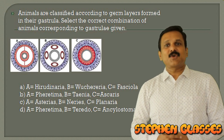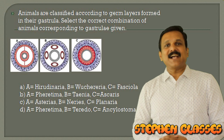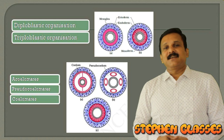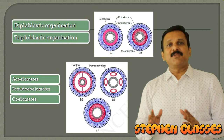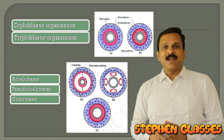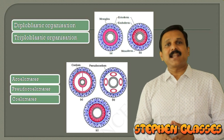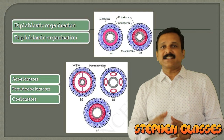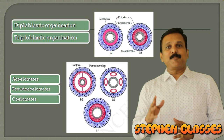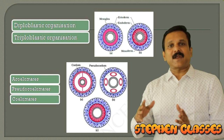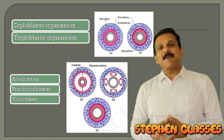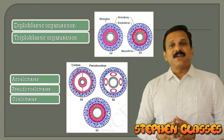Select the correct combination of animals corresponding to the gastrulae given. We can see that the gastrula is an embryonic structure; within this embryonic structure you can see the germ layers. According to the germ layers, animals can be classified into two categories: diploblastic organisms and triploblastic organisms.